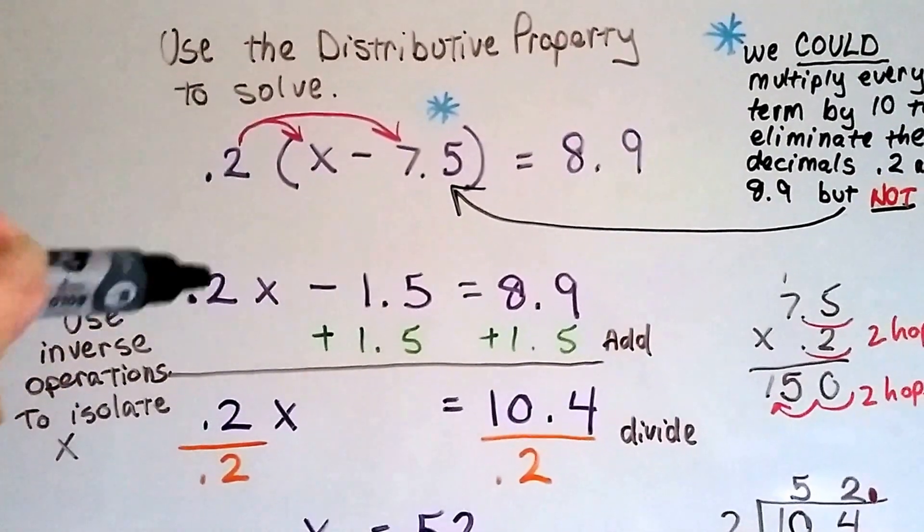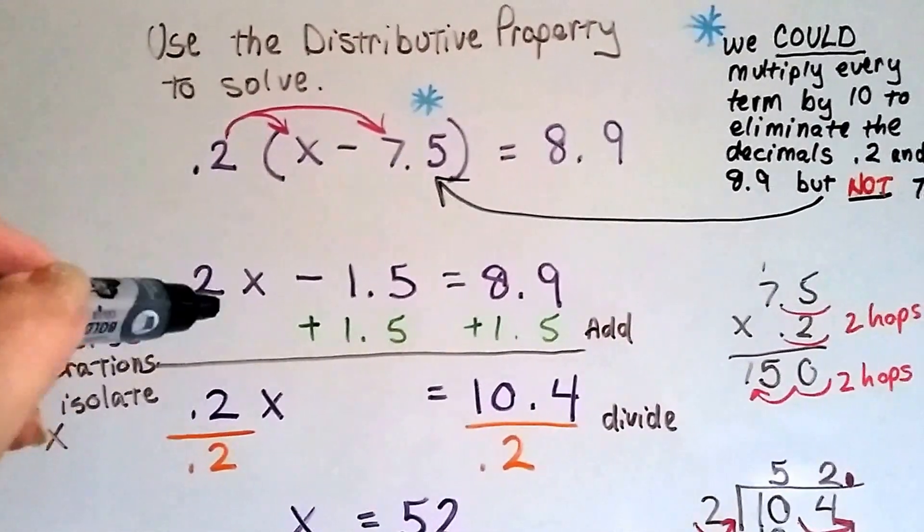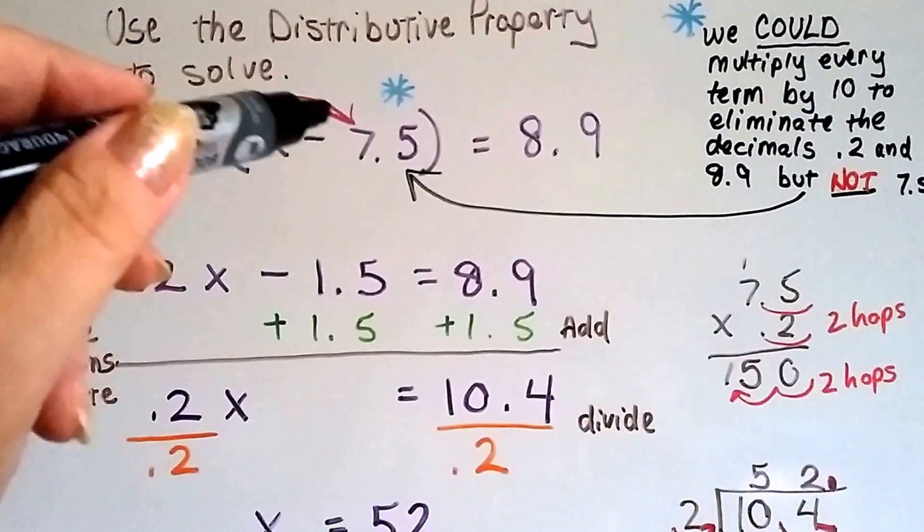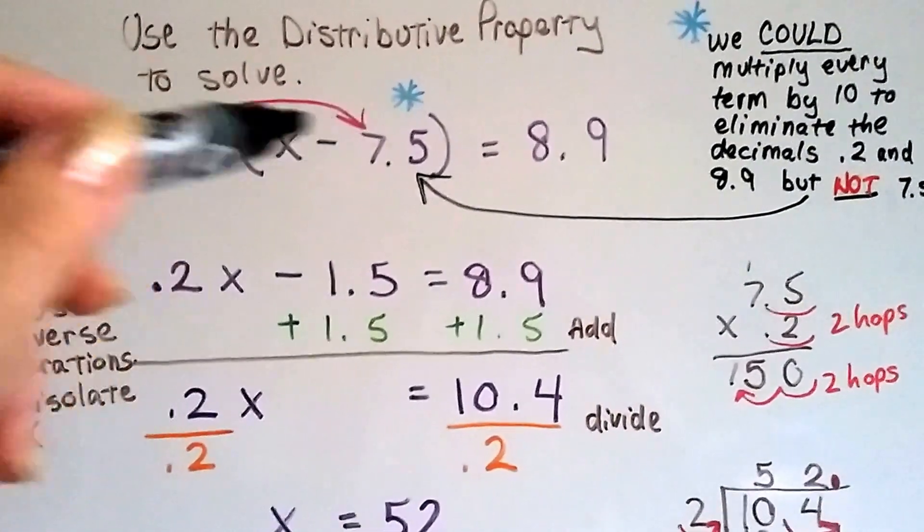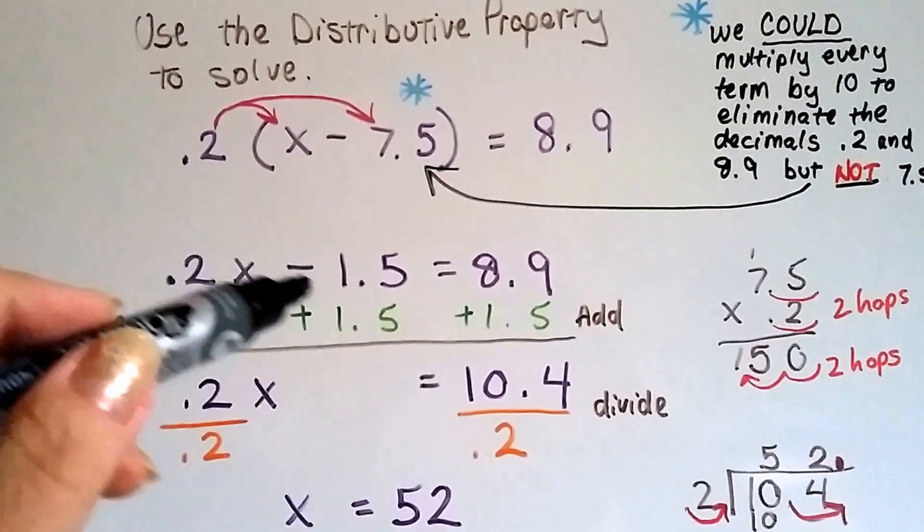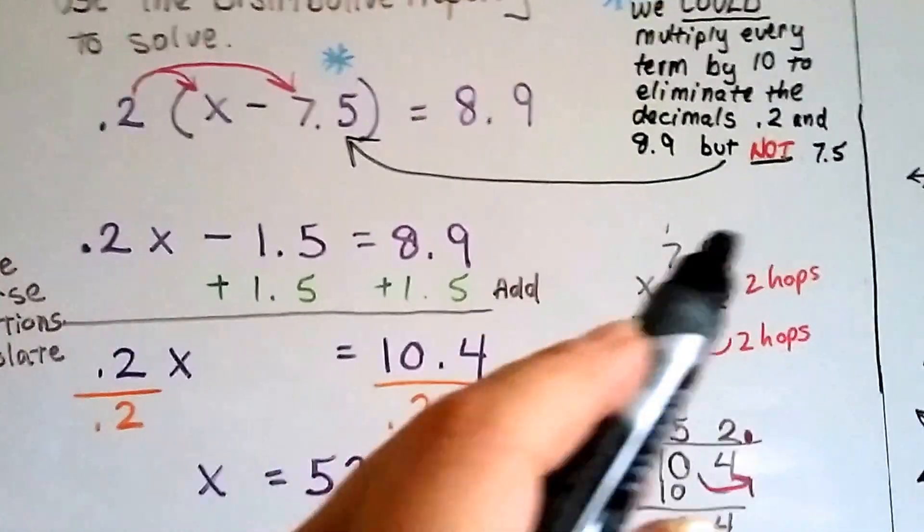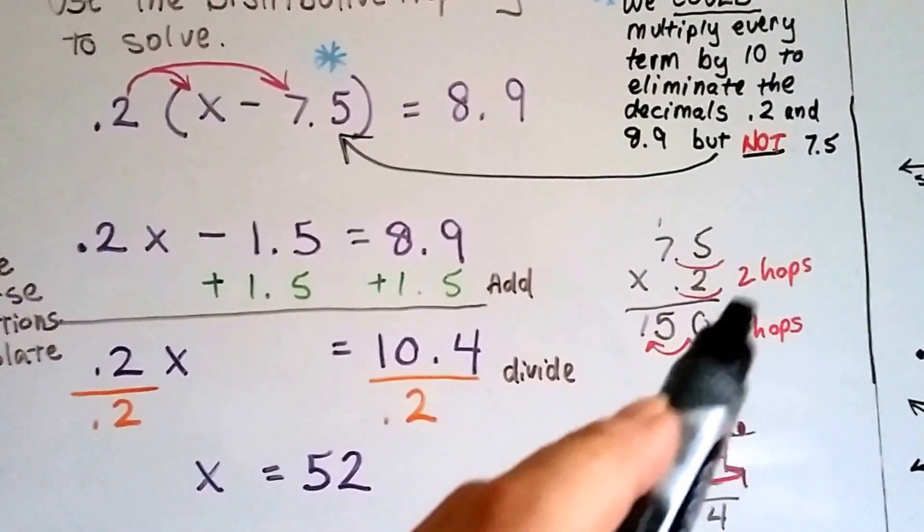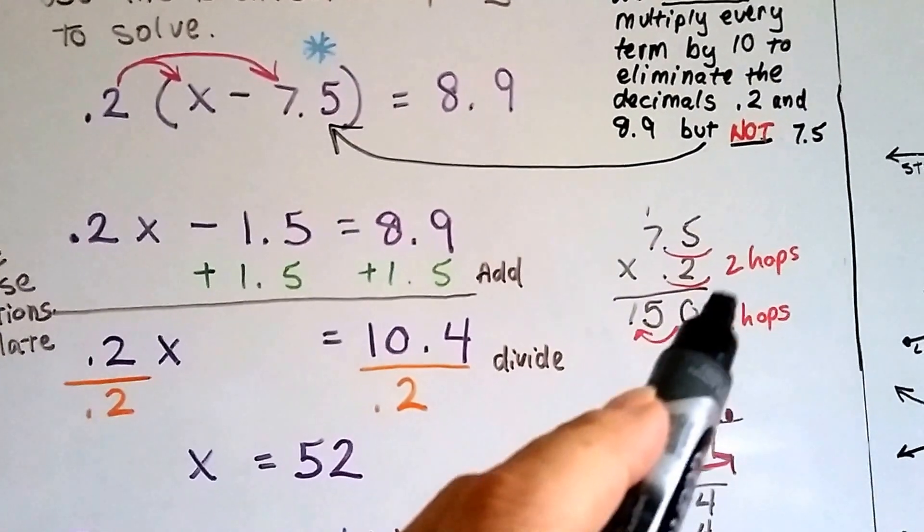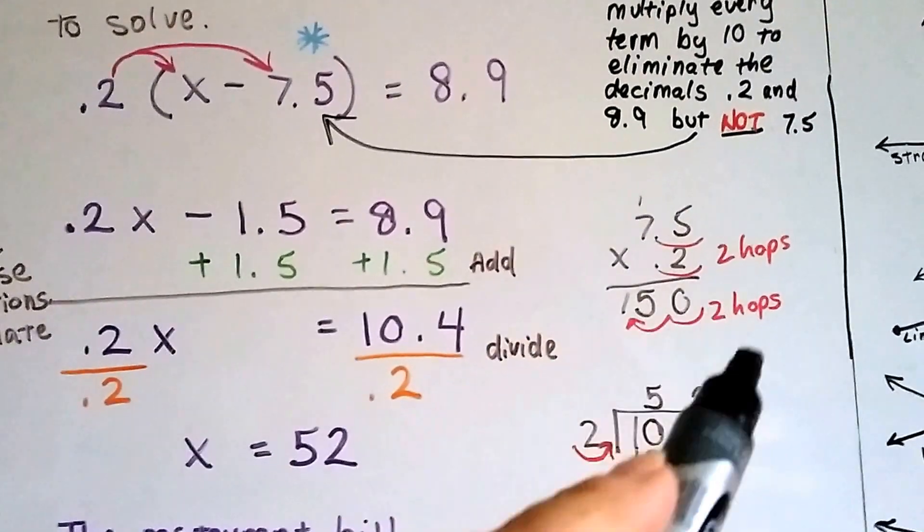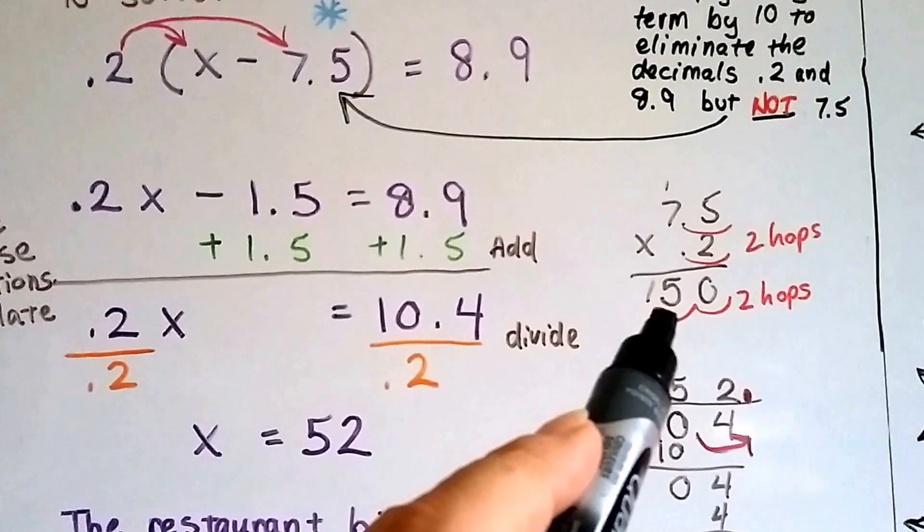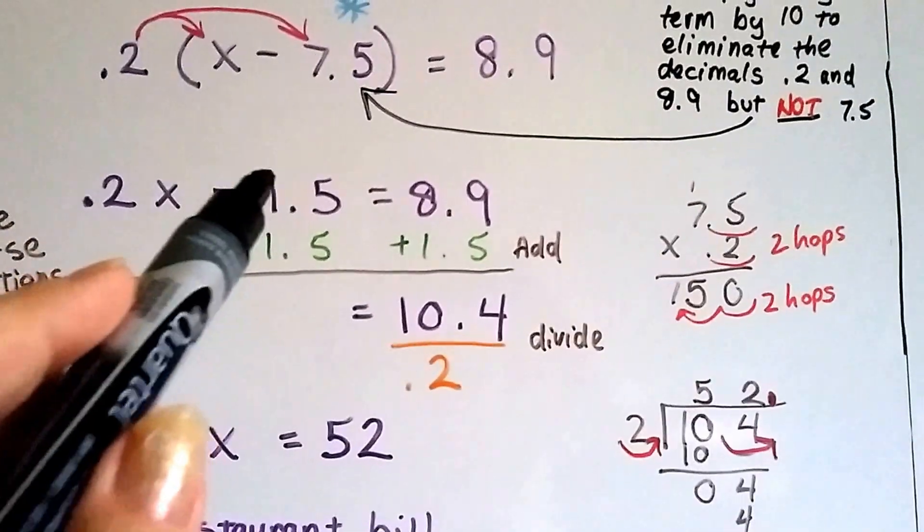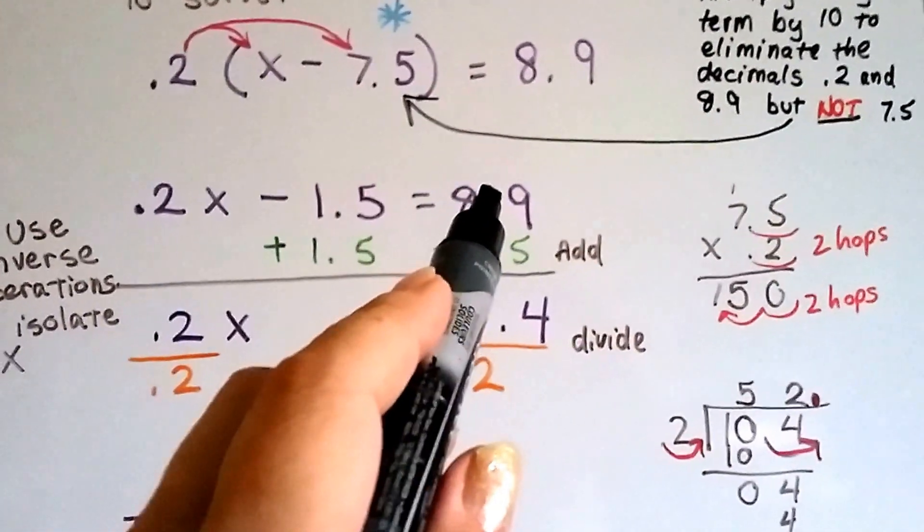So 0.2 times X is 0.2X right here. 0.2 times negative 7.5 is negative 1.5. 7.5 times 0.2 is 150. And because there was one hop, two hops in the equation, there's one, two hops in the product. So it comes out as 1.5. And that's going to equal the 8.9.